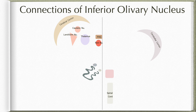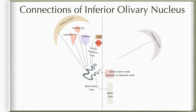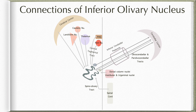The inferior olivary nuclear complex receives inputs from the contralateral spinal cord via the spinoolivary tract, and from various sensory nuclei in the brain stem — dorsal column nuclei, vestibular nuclei and trigeminal nuclei. It also receives input from the ipsilateral cerebral cortex, basal ganglia and thalamus, and from the periaqueductal gray and red nuclei in the midbrain via the central tegmental tract, as well as from the cerebellar cortex via the cerebello-olivary pathway. Its main output is to the cerebellar cortex via the olivocerebellar or par-olivocerebellar tracts through the inferior cerebellar peduncle, and its second output is to the contralateral spinal cord through the olivospinal tract.